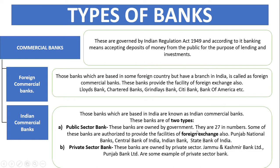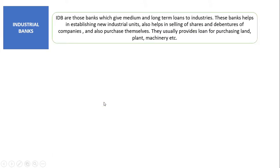Industrial banks also help in selling shares and debentures of companies and purchasing them. They provide loans for purchasing land, plant, and machinery. These are banks that give medium-term and long-term loans to industries and help new industrial units to establish themselves.